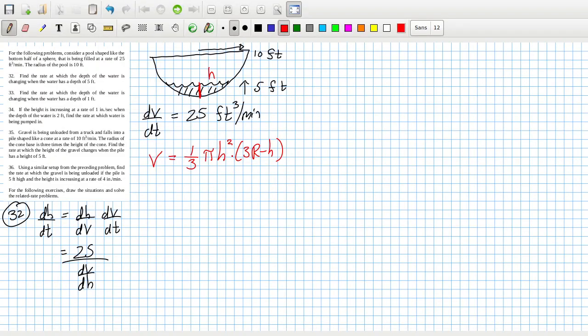Okay, I got the formula here. Let's fill it in. 1/3 pi h squared times 3 times the full radius minus h. So that would be 1/3 pi h squared times 30 minus h. So 10 pi h squared minus 1/3 pi h cubed. Putting in the derivative, that's 20 pi h minus pi h squared. Let's see what we get here. So 25 over 20 pi times 5 minus pi times 5 squared. So to four decimal places, 0.1961 feet per minute.